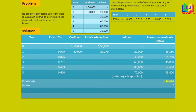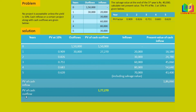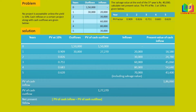Adding all the present values of cash inflows gives us 1,86,060. That is the total PV of cash inflows. We also find the PV of cash outflow, because the formula for net present value is PV of cash inflows minus PV of cash outflows. In this problem, the PV of cash outflow is 1,77,270. So: 1,86,060 minus 1,77,270.